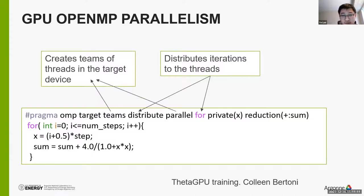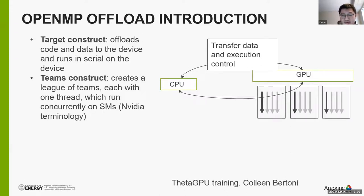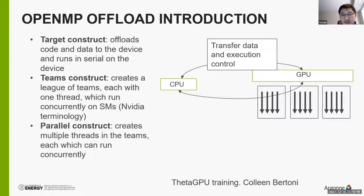For GPU offload you need to add a bit more. The directive becomes: you use 'target' to indicate it needs to go to an accelerator, then 'teams' and 'parallel' to spawn threads within the GPU accelerator, and 'distribute' and 'for' to distribute concurrent loops and ensure full parallelization. You need a target construct — basically from the CPU you tell the GPU to execute certain things and transfer data back and forth. You must do this to leverage the full compute potential of a GPU.